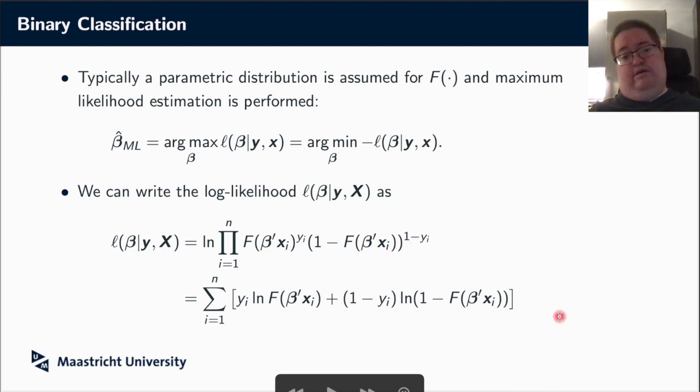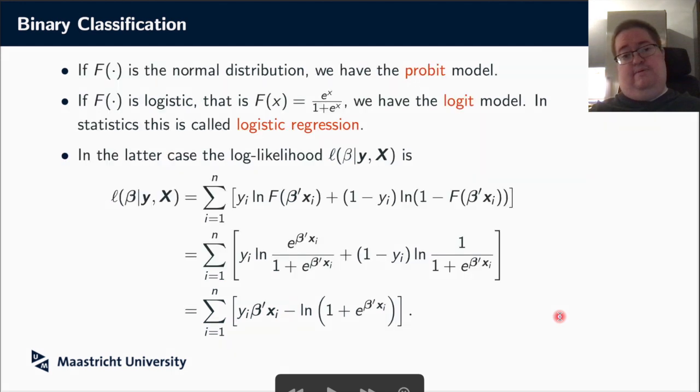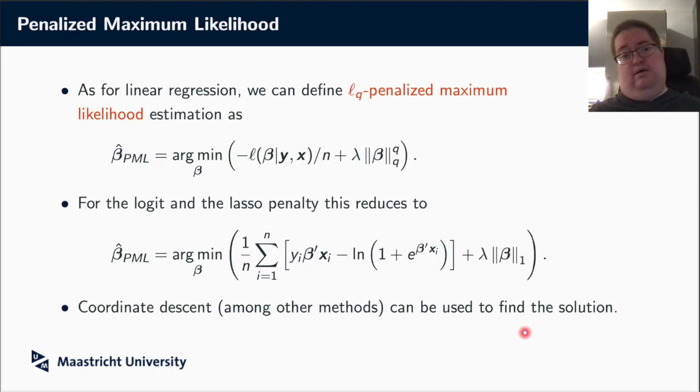And we can, of course, then write that out. And then, of course, it depends on how we choose f. Do we choose the normal distribution? Then we get the probit model. Do we choose the logistic distribution? We get the logit model. Or, in fact, as people typically call it in statistics, then it's called logistic regression. Well, then, of course, you can plug in and you can write down the likelihood and so on. And this typically would then have to solve numerically.